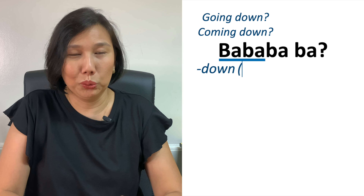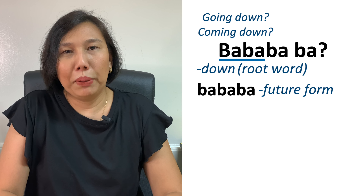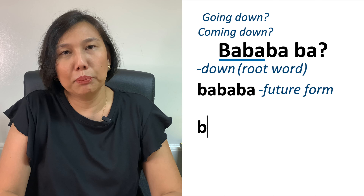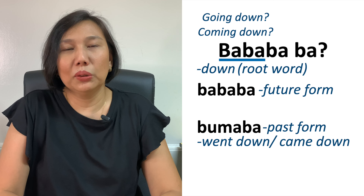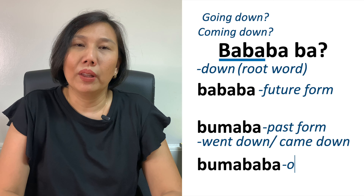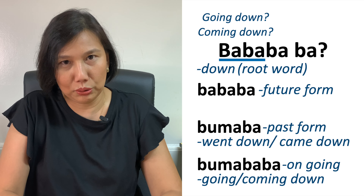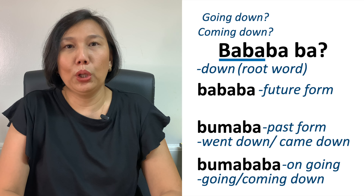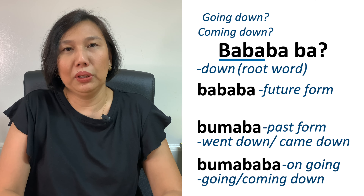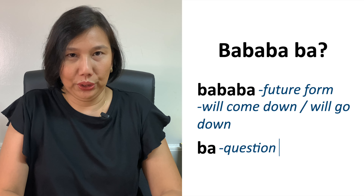Why did it become bababa? First: two syllables — baba is the root word. Three syllables — bababa is the future form. Baba is an um verb. When you form the past, it's bumaba. When you form the ongoing or routine action, it is bumababa. When you form the future — the contemplative action, still planning to do — you remove the um and repeat the first syllable of the root. So if the root is baba, the first syllable repeats, and bababa means will come down or will go down.